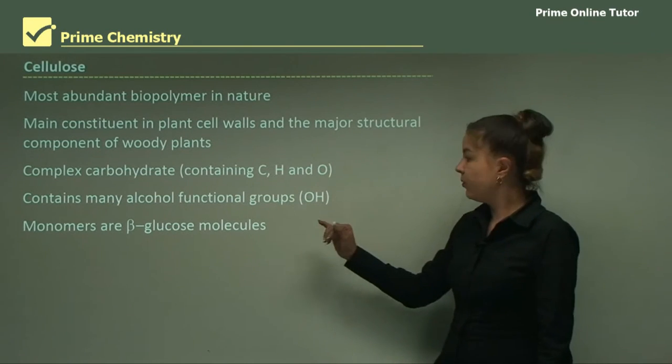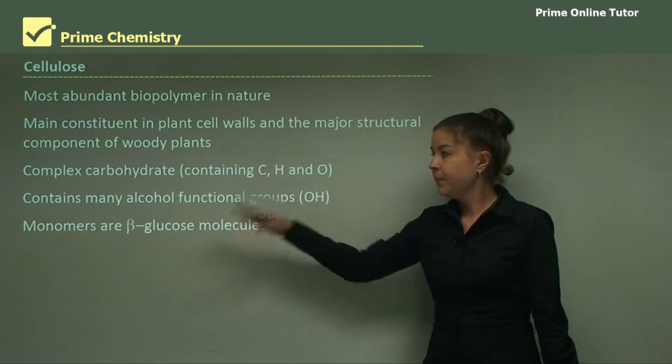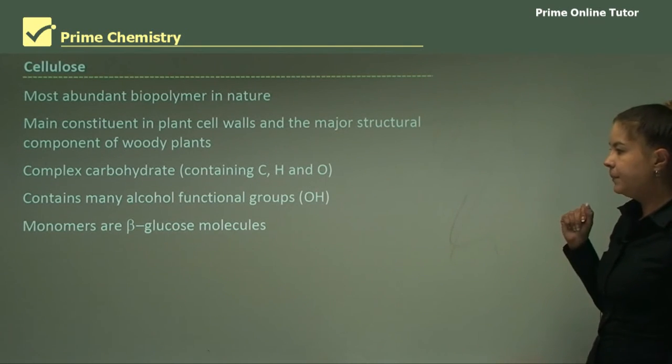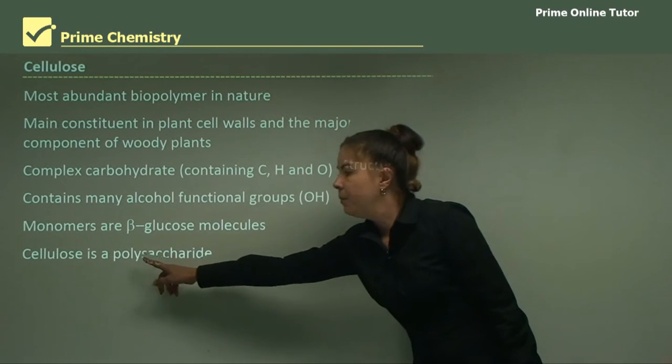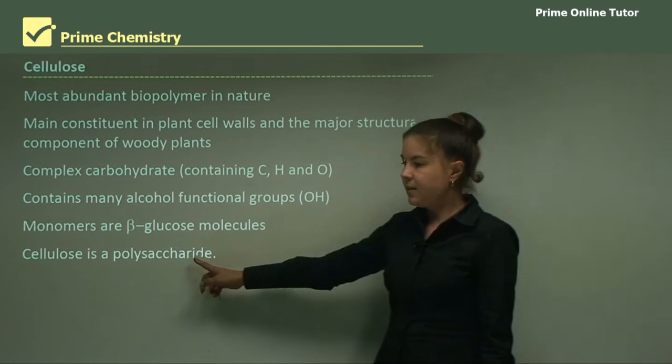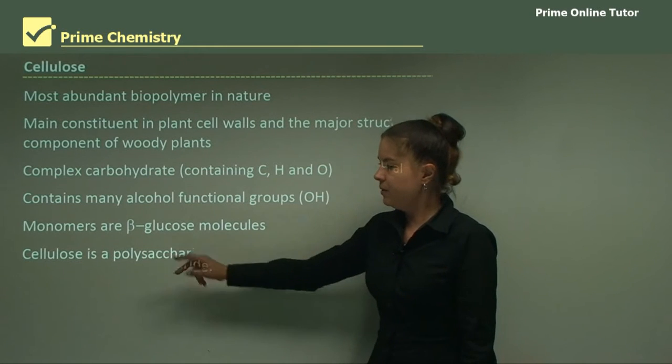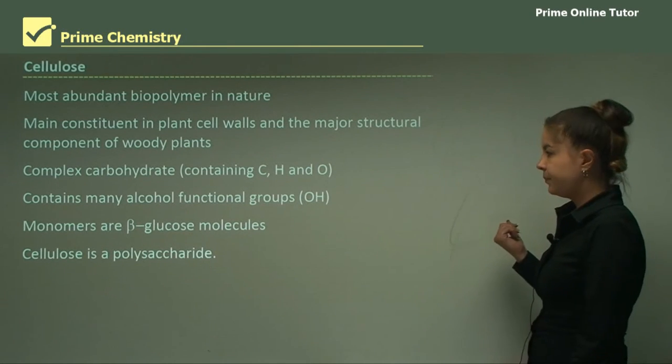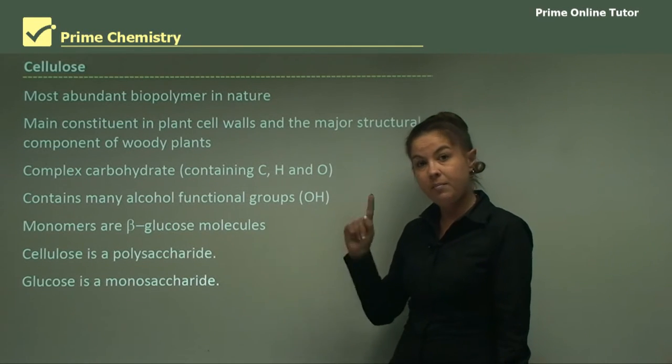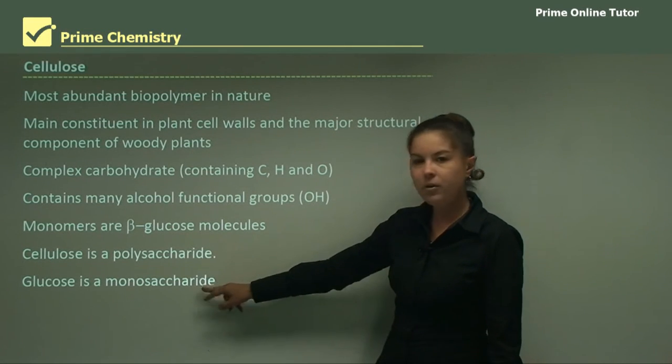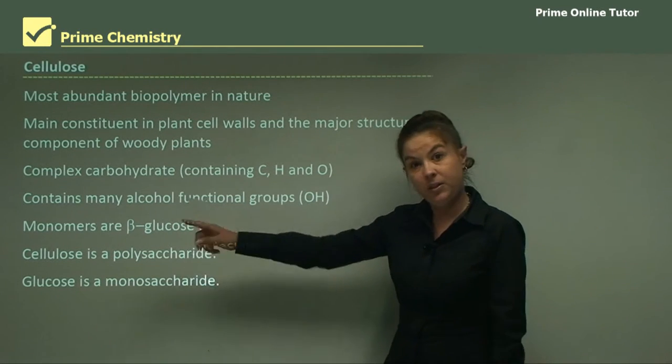The monomers of cellulose are beta-glucose molecules. Now glucose is a sugar. And again, I'll show you the structure shortly. Cellulose is a polysaccharide, which means poly, meaning many, and saccharide, meaning sugar. So glucose is a sugar. So many sugars is cellulose. Glucose is a monosaccharide, meaning one sugar. So glucose, one sugar, put lots of glucose structures together, and you get many, which is cellulose.